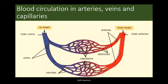By this diagram you can understand how blood circulation takes place in arteries, veins, and capillaries. The main arteries divide into arteries, which divide to form arterioles. Then arterioles divide and form a capillary network. Capillaries join together to form venules, venules join to form veins, and veins join to form a main vein.